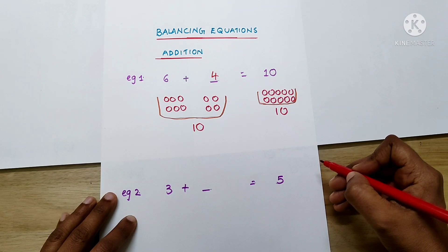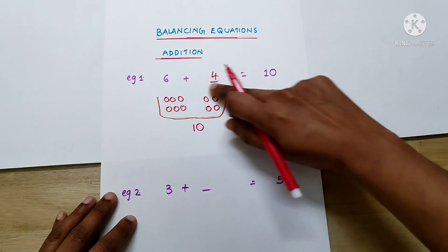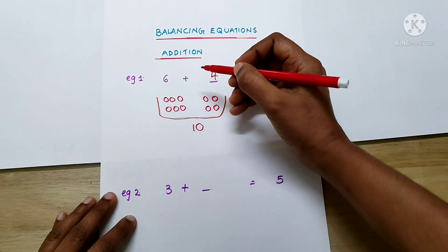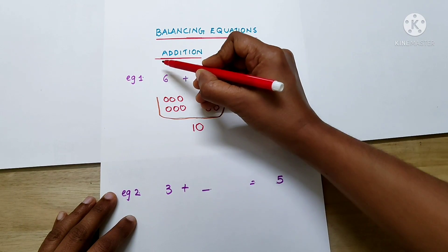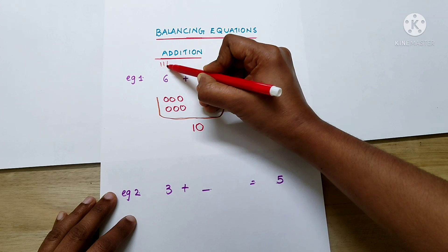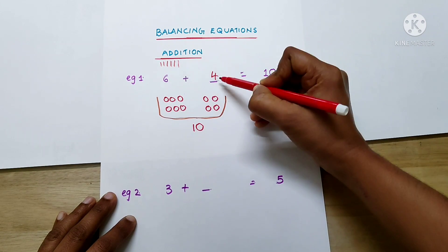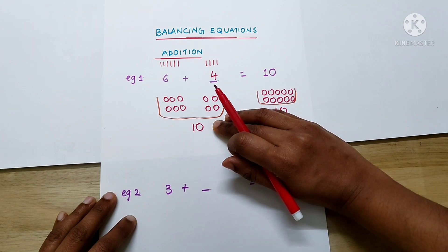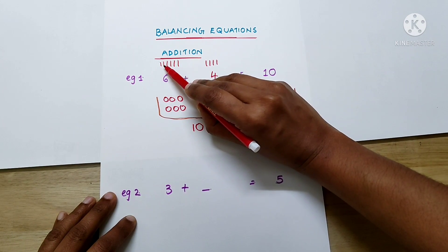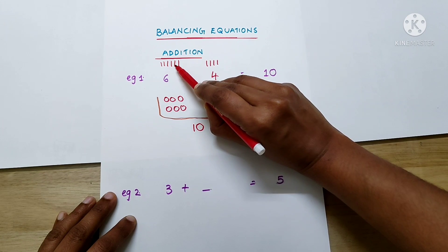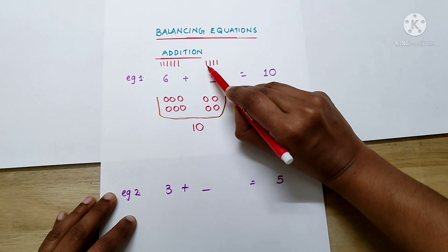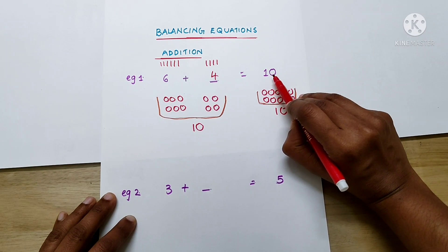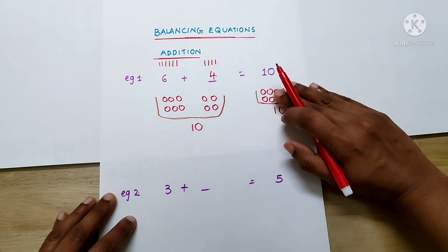Now let's check whether our answer is correct — whether this equation is correct. There are 6 here, plus 4. Let's see the total number of sticks: 1, 2, 3, 4, 5, 6, 7, 8, 9, 10. Yes, we got the answer as 10, so the equation is correct.